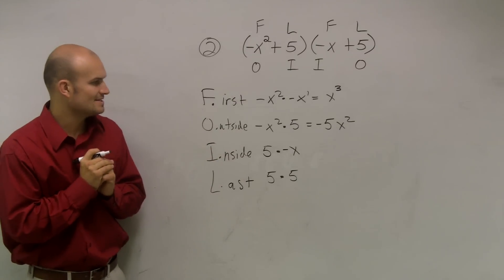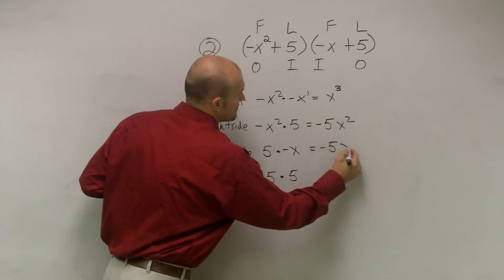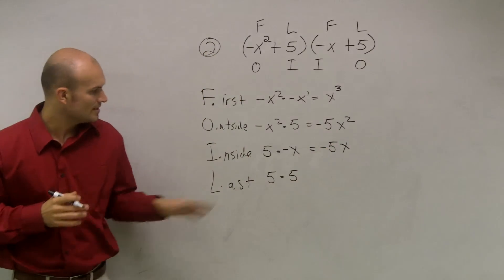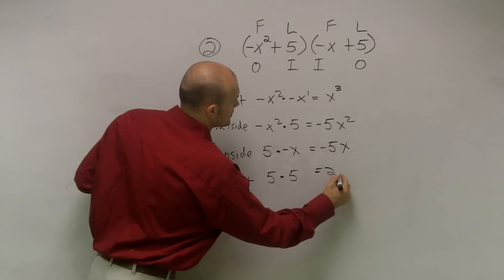So here comes the inside, 5 times negative x is equal to a negative 5 times x, and then the last, 5 times 5 equals 25.